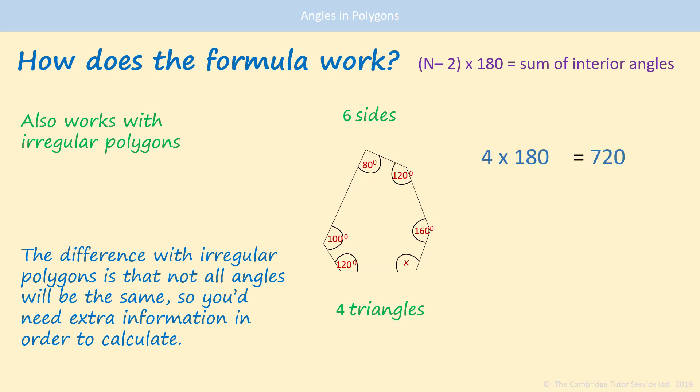And you work out the sum of angles for a hexagon, that's 720. Take away the angles that are there, and you'll be able to work out the angle X, which is 140 degrees.